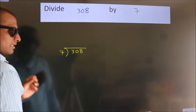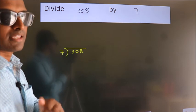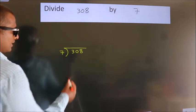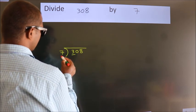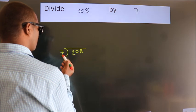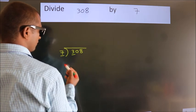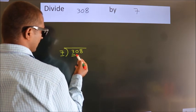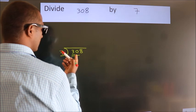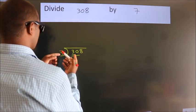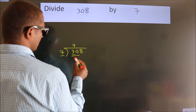This is your step 1. Next, here we have 3. Here 7. 3 smaller than 7. So, we should take 2 numbers. 30. A number close to 30 in 7 table is 7 fours 28.